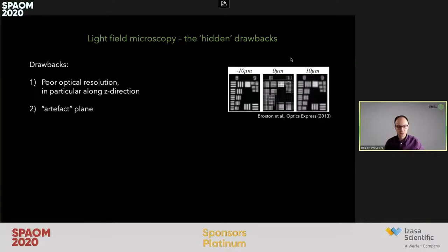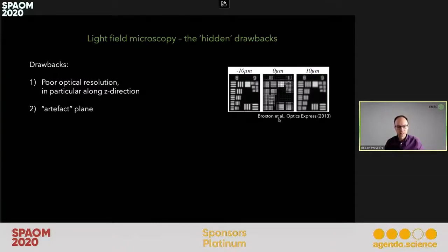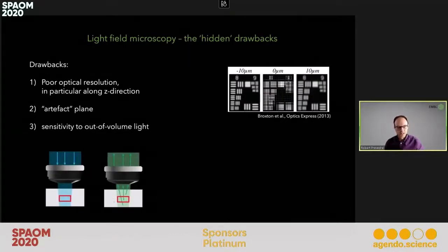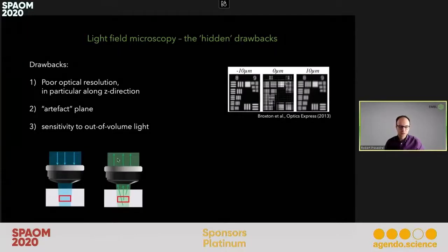Around the zero position of the microlens array, there is no dense sampling of the image space, and therefore there is a so-called artifact plane where the resolution is still fairly poor and cannot be improved by standard deconvolution. Since light field microscopy in our approach is a computational reconstruction technique, it is also sensitive to out-of-volume light. If we excite fluorophores outside our volume of interest, this will bleed into our volume and confuse the reconstruction algorithm.